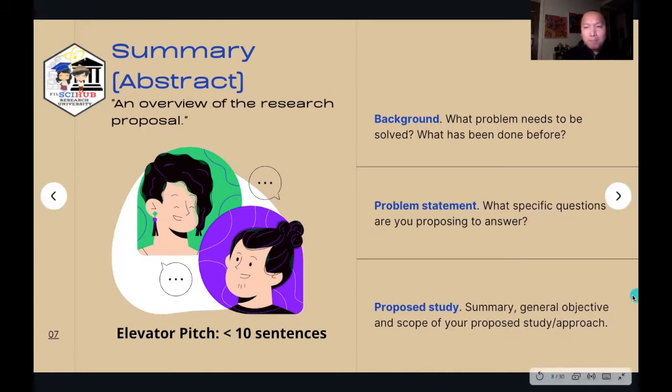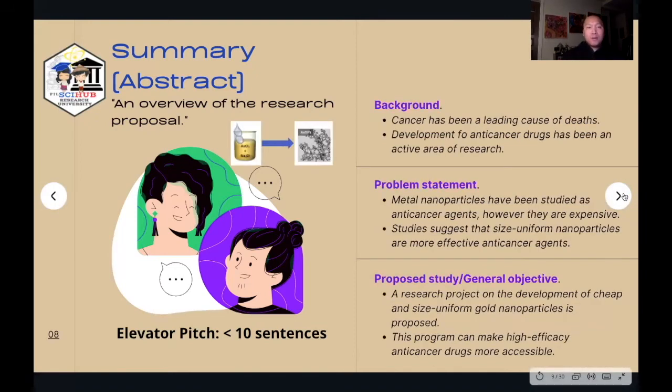It can be much easier to digest some of these tips if we have examples. This is a specific example framed around the gold nanoparticle synthesis idea that we introduced earlier, where we're trying to make cheap and size uniform gold nanoparticles for anti-cancer treatment. These are just examples for the purposes of exemplification.